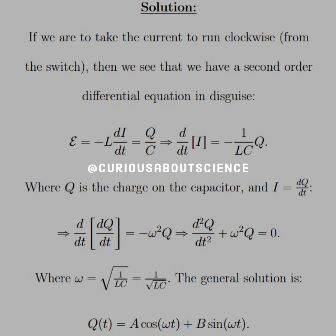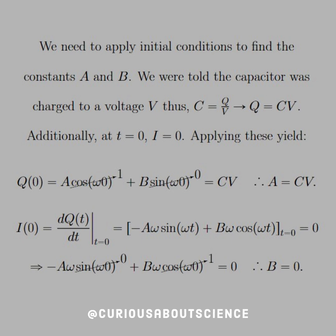And we see that the general solution to that is Q of t is equal to A cosine omega t plus B sine omega t. And it's our job now to apply initial conditions to solve for what A and B are.